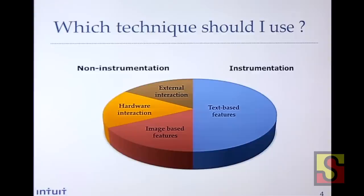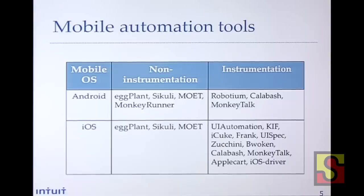To make it easier, this pie chart helps you understand which different approaches to use. For instrumentation, the great advantage is when you have text-based features to test. For non-instrumentation, you have hardware interaction, external interaction, image-based features, and custom UI elements. Understanding the characteristics of the application is key. Grouping the tools by mobile OS gives you an idea of your choices.